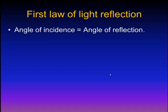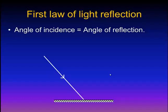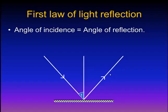The first law of light reflection states that the angle of incidence is equal to the angle of reflection. If we have a plane mirror and we have an incident light ray, it will reflect back in the same medium. And if we draw the perpendicular from the point of incidence, we will have two angles. The first angle is between the incident light ray and the normal, which is called the angle of incidence.